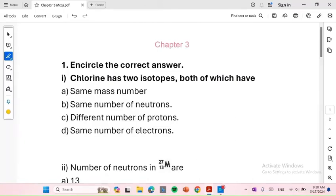Assalamualaikum warahmatullahi wabarakatuh. Chapter 3 chemistry ke questions discuss karne ja rahe hain to chalie start karte hain. Number 1: Chlorine has 2 isotopes, both of which have same number of electrons.